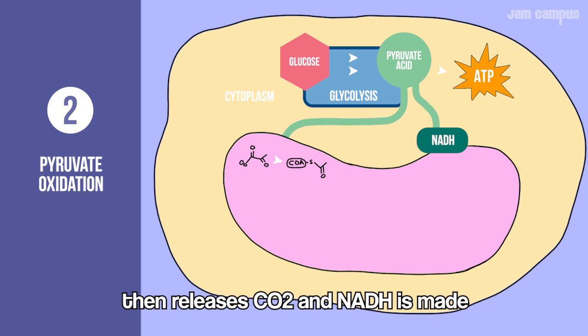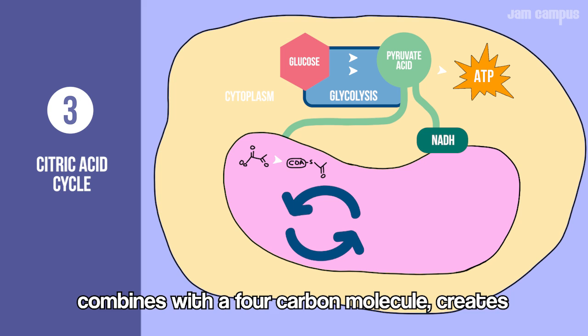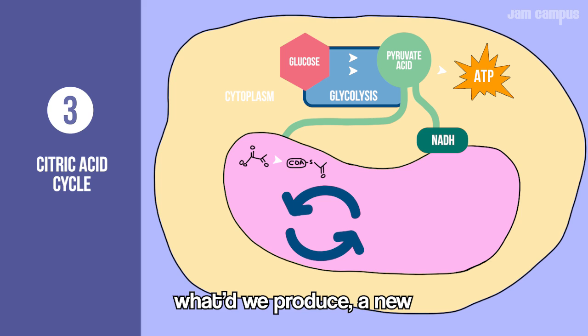Pyruvate oxidation occurs in the mitochondrial matrix. A 2-carbon molecule is converted by an enzyme to make acetyl-CoA, releasing CO2, and NADH is made. In the citric acid cycle, that acetyl-CoA joins a full carbon molecule, creating a regenerated full carbon molecule.